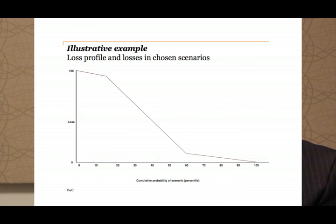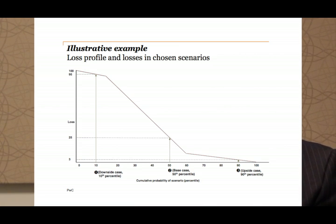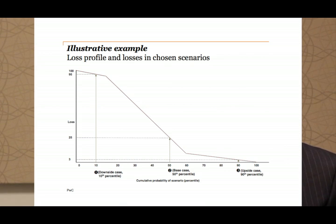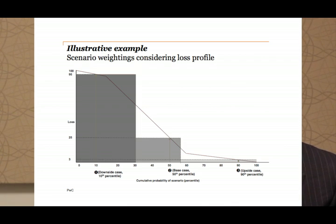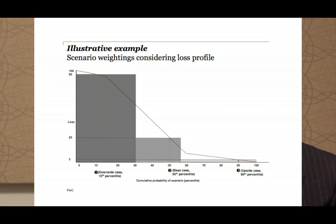What's really important in determining the weightings is looking at what happens in the, for example, three scenarios you've chosen, and then understanding what cluster of scenarios each is most representative for. So if we look at the diagram, in this illustrative example it's been determined that a downside scenario at the 10th percentile is going to capture those material non-linearities. If in that downside scenario the loss that arises is 95, the key question for the weighting is: what range of scenarios is that loss of 95 the most representative for? Because of the relatively flat loss profile in the region between the 0th and the 30th percentile, that loss of 95 is actually the most representative for all those scenarios between the 0th and the 30th percentile — so you might well expect that a weighting of 30 percent is given to that downside scenario.